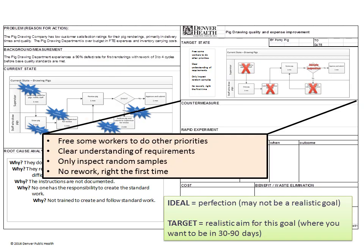When showing what the target state should look like after one improvement cycle, focus on where you want to be in 30 to 90 days. How will you know this improvement cycle was successful? This could include drawing the proposed better way to work, setting improvement targets, or describing what to expect — such as a clear understanding of requirements or no rework.